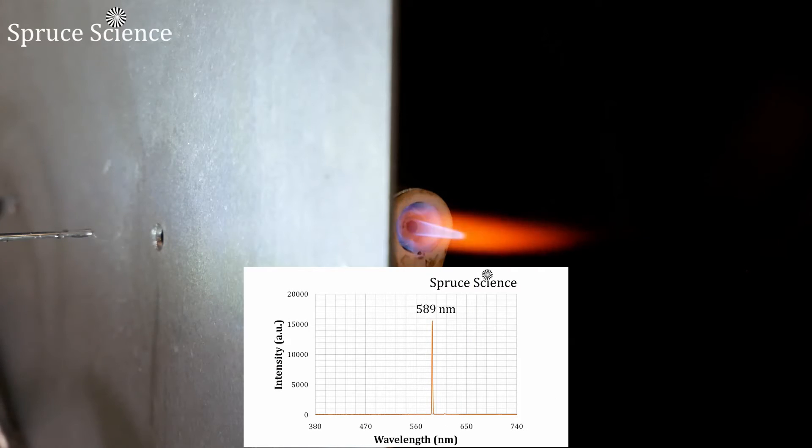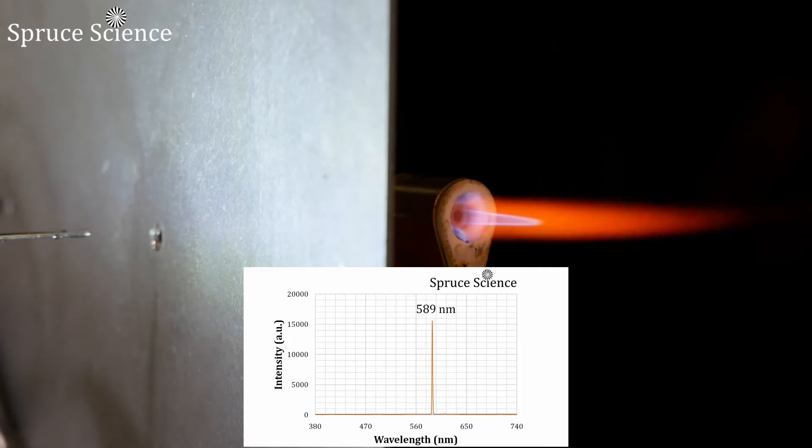Your eye is responsive to wavelengths ranging from 380 to 740 nanometers on the electromagnetic spectrum.